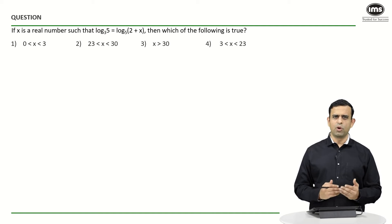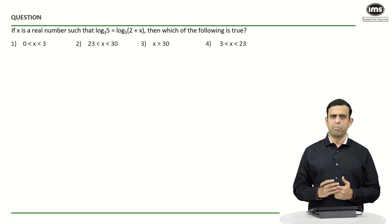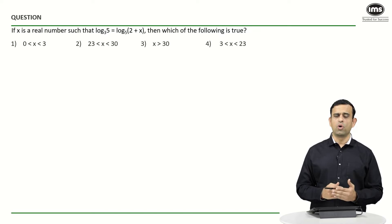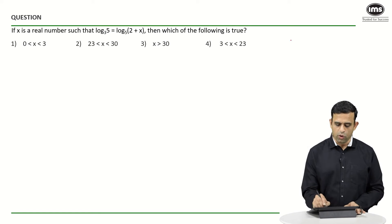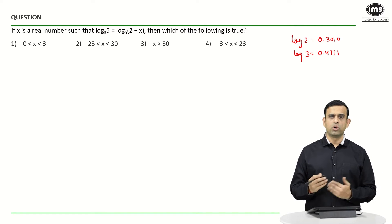Now there can be a couple of methods to solve this particular question. Many of you, let's say, if you know the value of log 2 and log 3—so log 2 is known to us as 0.3010, and log 3 happens to be 0.4771—so no one really knows what's the value of log 5 to the base 3.